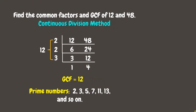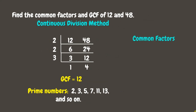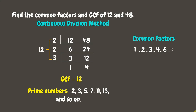To list down the common factors, let us start by including 1, which is a factor of all numbers. Next, let's include the prime factors 2 and 3. Then, let's multiply the prime factors together to get the other factors: 2 times 2 is 4, 2 times 3 is 6, and 2 times 2 times 3 is 12. We can see that 12 is our greatest common factor.